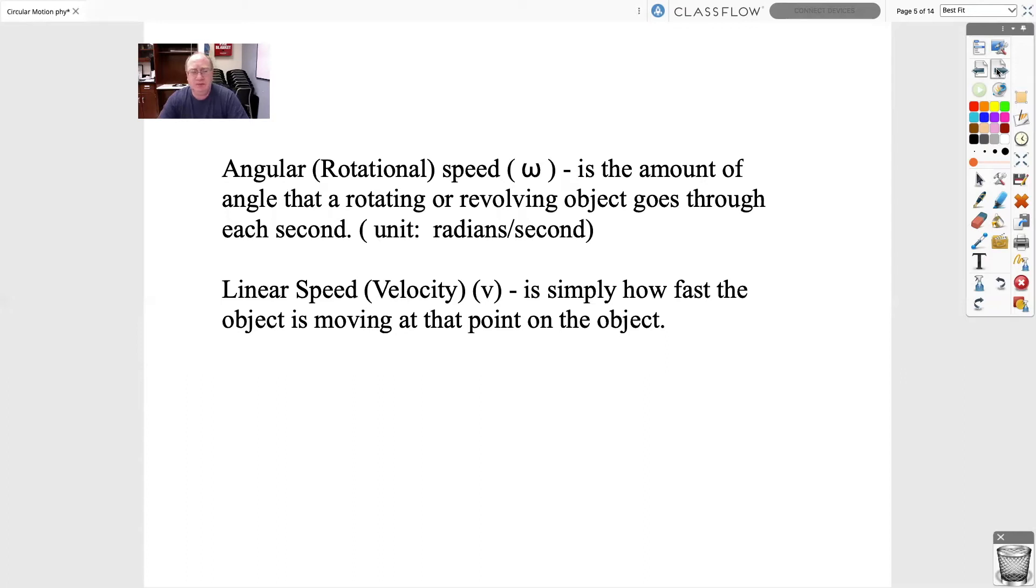Now there's a couple of different terms for speed. Our old term is called linear speed or linear velocity, and that's the one that we've always used. It's V equals D over T, it's just velocity, and it's simply how fast the object is moving.